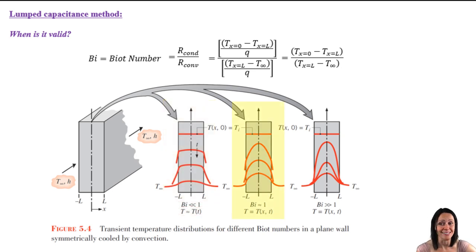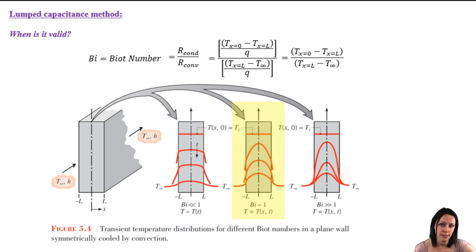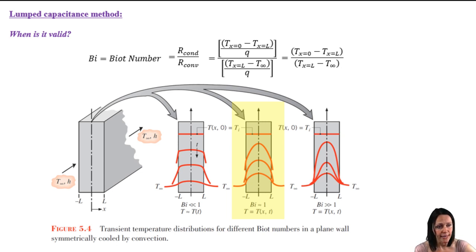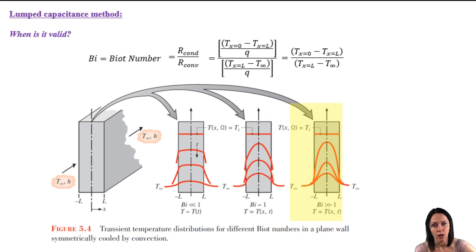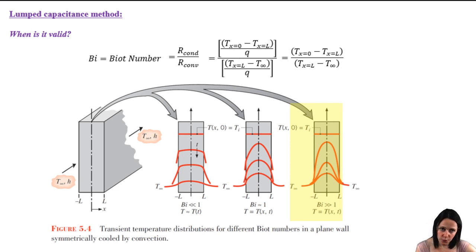We could see that that is not the case with the other two scenarios. In the middle scenario, the temperature gradient is similar within the wall and the fluid, so the resistances are pretty similar and therefore the Biot number is close to 1. And in the last scenario, we have a large temperature gradient in the wall — a large conductive resistance — but a small gradient in the fluid, so a small convective resistance.